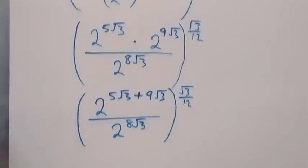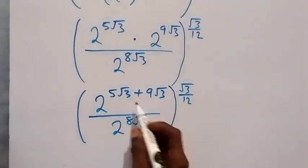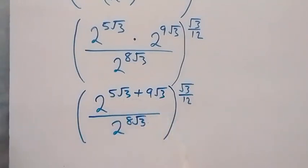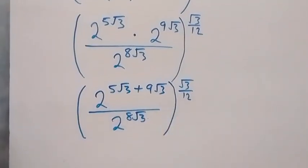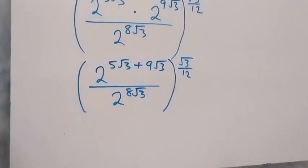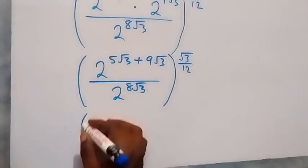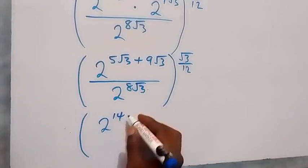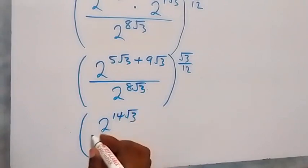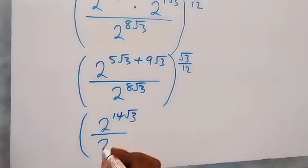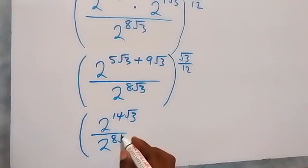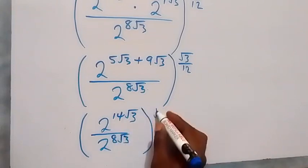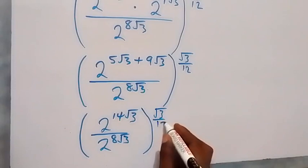We can sum these together because they are similar terms. The coefficients: 5 plus 9 equals 14. So this becomes 2 raised to power 14 root 3, divided by 2 raised to power 8 root 3, all raised to power root 3 over 12.